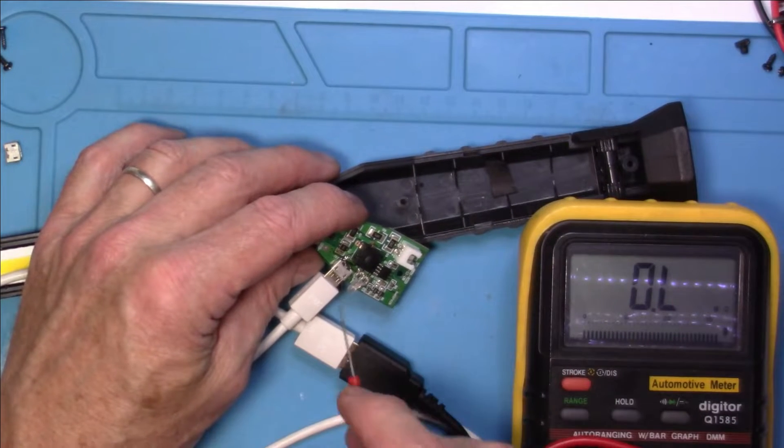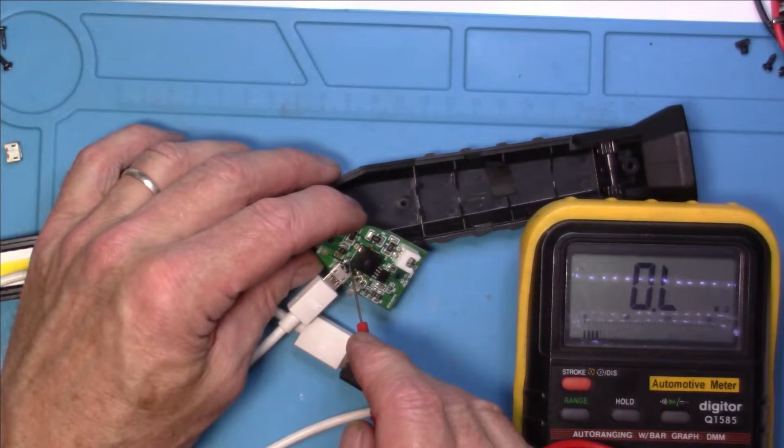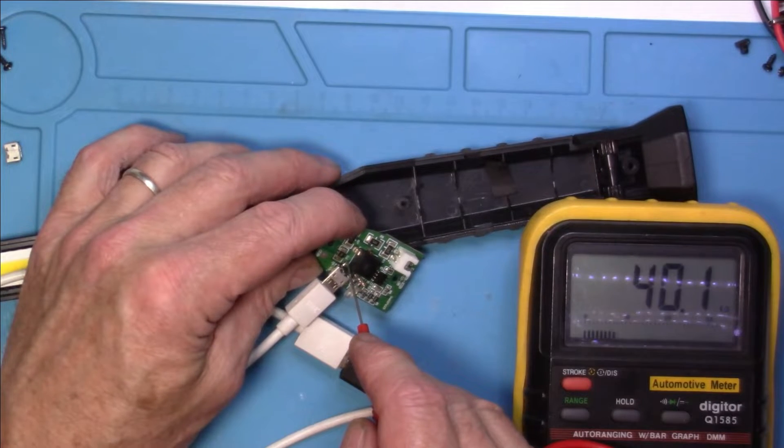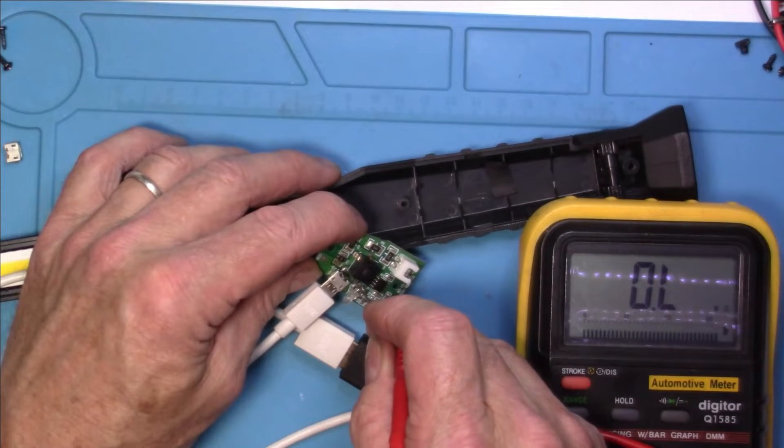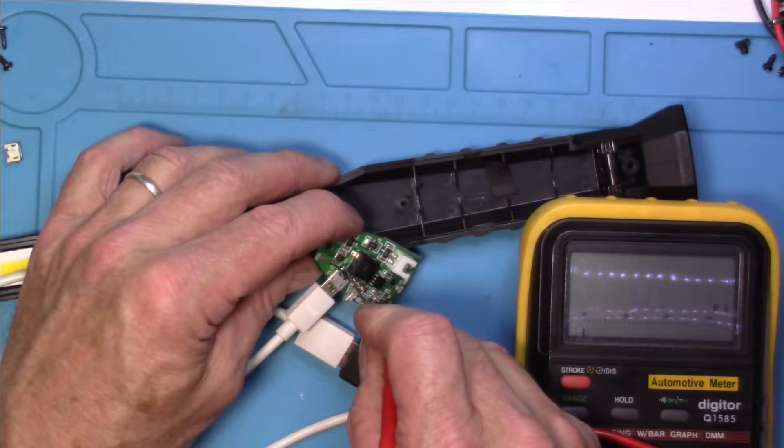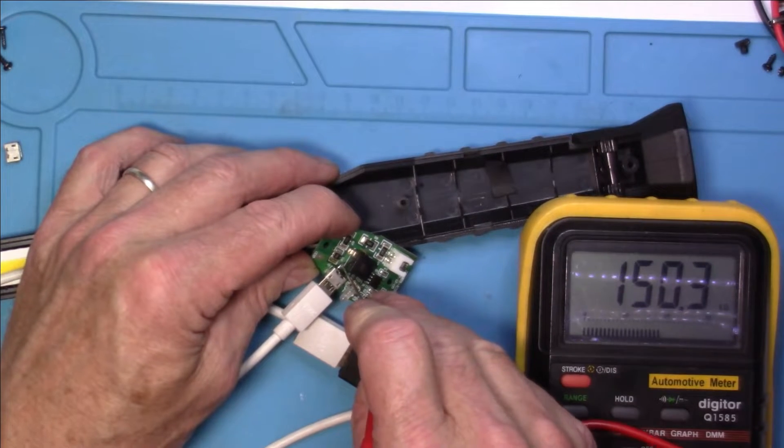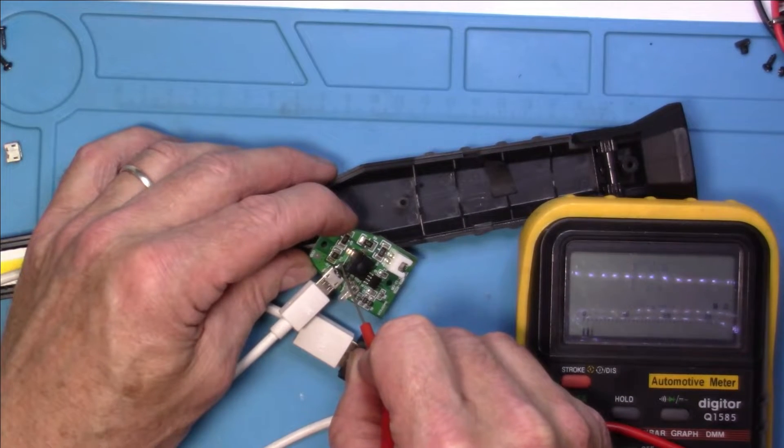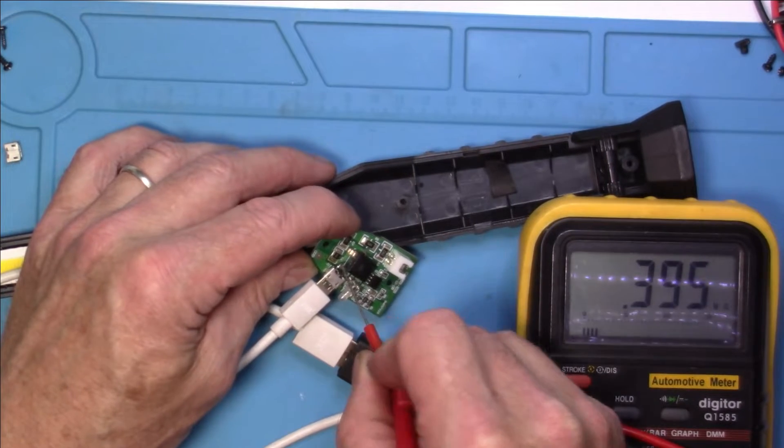So for the positive side of things, all I want to do is see if I can get across to here. Now, if there was a short, that would go down to zero or close to. And in this case, we've got, it should be mega ohms or something similar to that. There we go. Perfect.